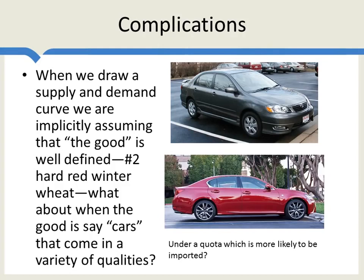In fact, when we had in the 1980s the voluntary export restraints against Japanese automobiles, this is precisely the time that the Japanese suppliers started to move into higher quality production — started to produce the Lexuses and so forth. So a quota, when quality is a variable, will tend to push suppliers into producing higher quality.